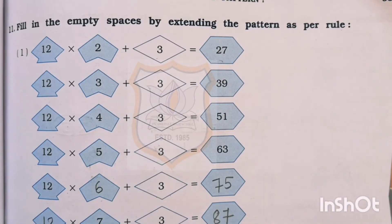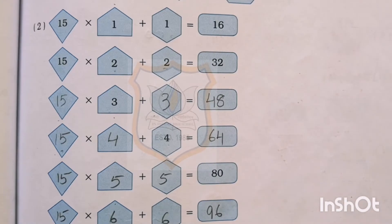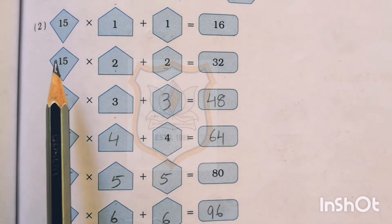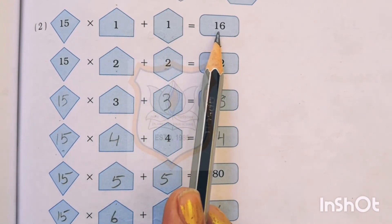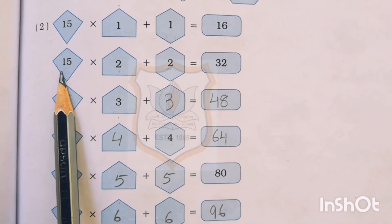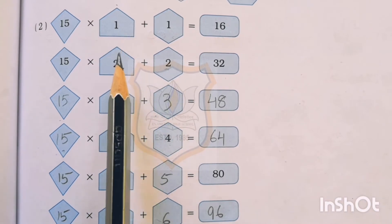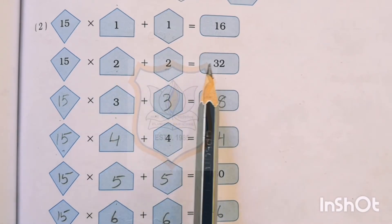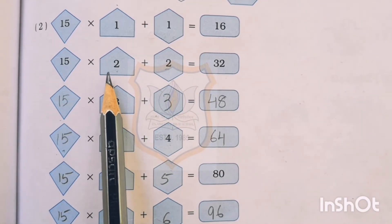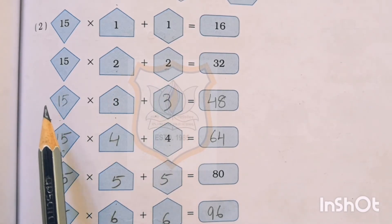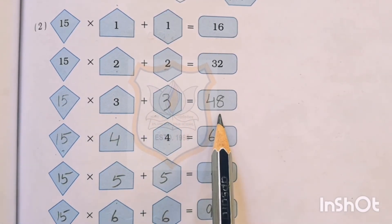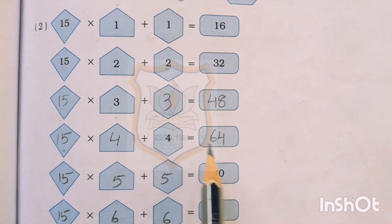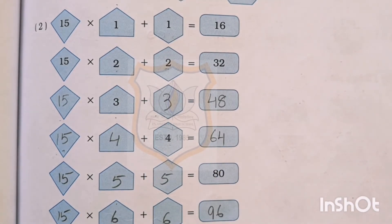Students, remaining first part of question number 11 you have to do by yourself. Now second part of question number 11. Here 15 is given. 15 multiplied by 1 plus 1 is equal to 16. Then again 15 is taken, and in place of 1 we use 2, and we add 2 also. 15 multiplied by 2 plus 2 is equal to 32. The number we multiply by, we also add the same. Then 15 multiplied by 3 plus 3 equals 48. 15 multiplied by 4 plus 4 equals 64. Remaining second part of question number 11 you have to do by yourself.